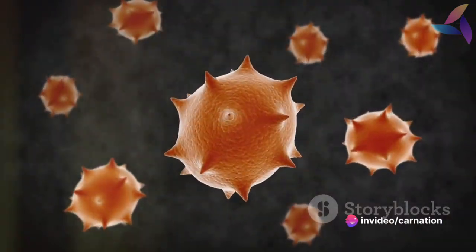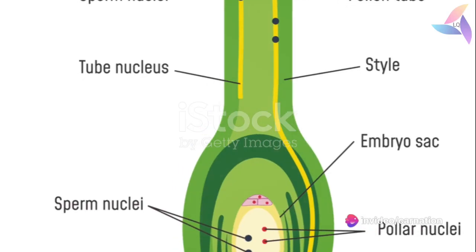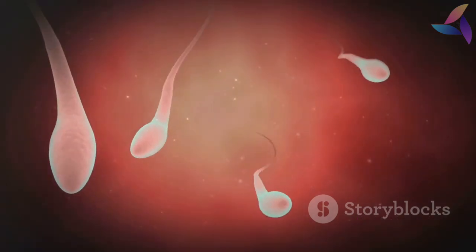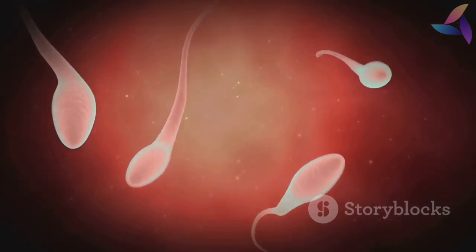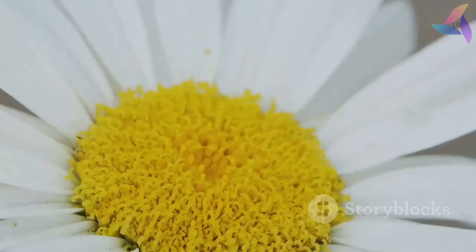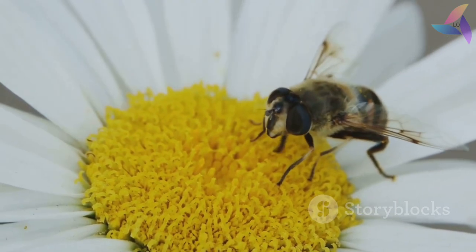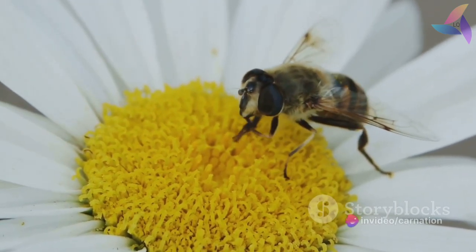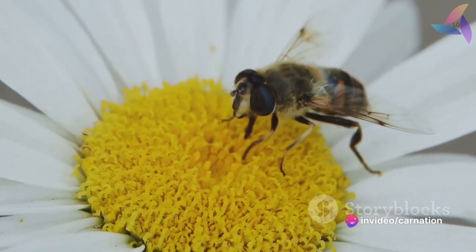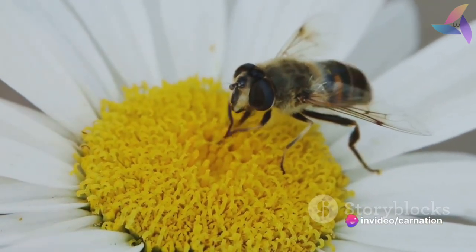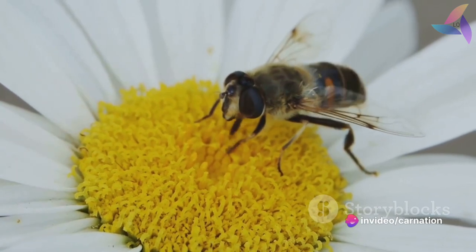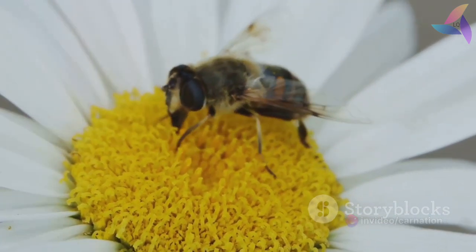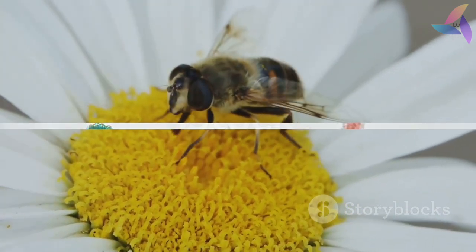Within this protective exine lies the entine, a second thinner wall. The entine safeguards the all-important genetic cargo, which is split between two cells. The larger of these two cells, the tube cell, is destined to form a pollen tube — a kind of biological bridge which allows the second smaller cell, the sperm cell, to travel to the female ovule.